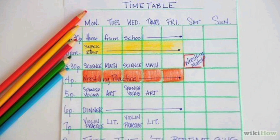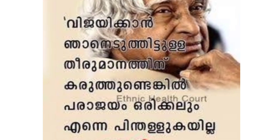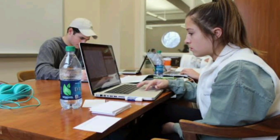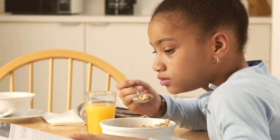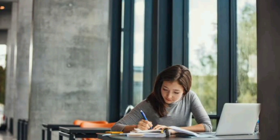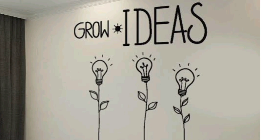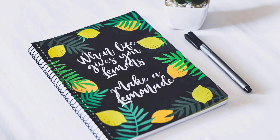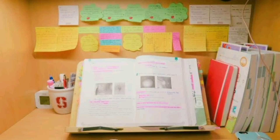If you are a student, you will be able to use a study timetable. With a study timetable, you will be able to adjust the right way. In biology, for example, there is a timetable for each part — divided into 4 parts. If you do this, you will be able to cover all subjects.